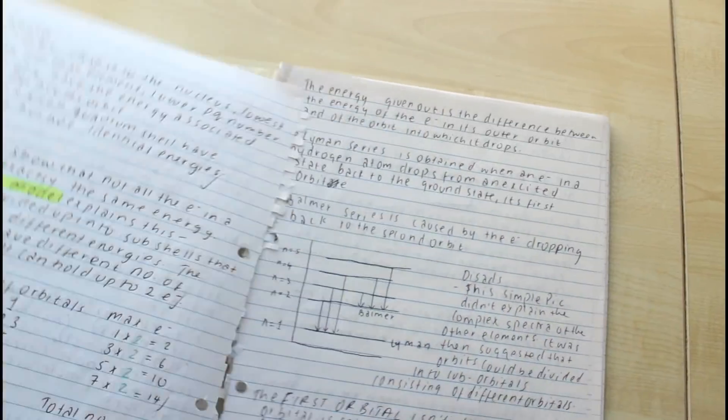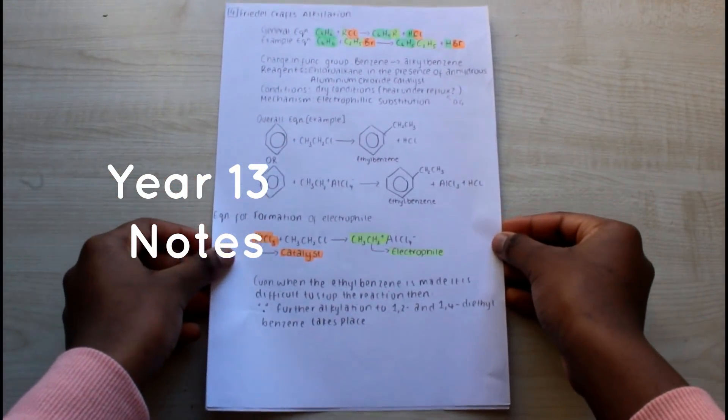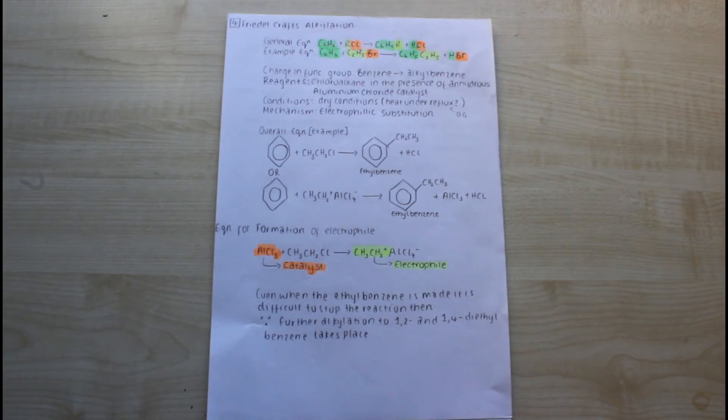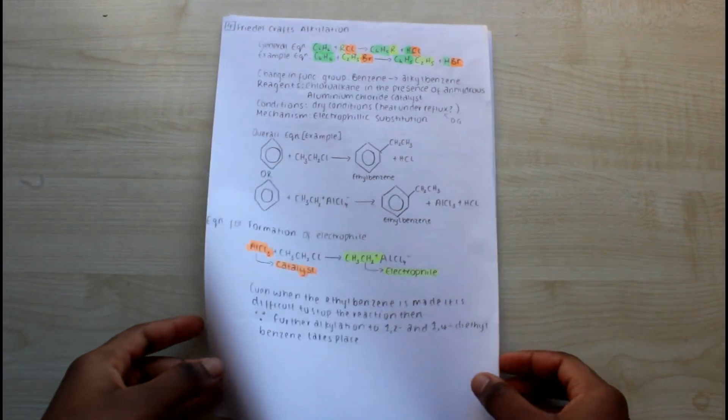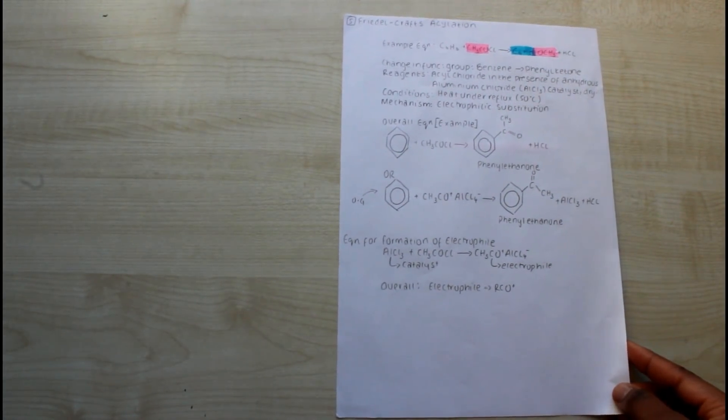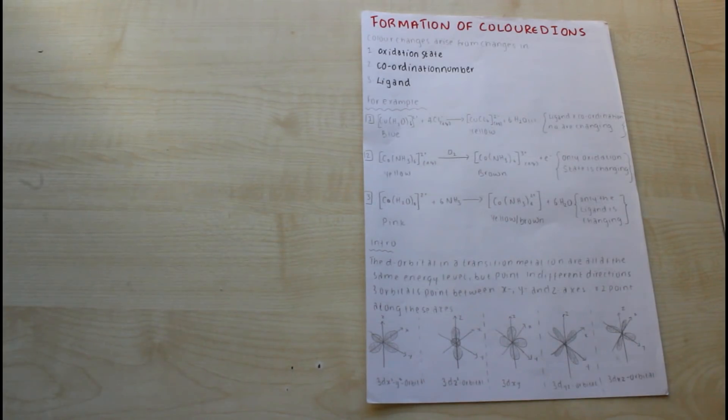So something had to change. Things started to click towards the end of year 12 and I found a note-taking method that works for me. I switched up my note-taking format and made it more engaging for myself. As you can see, these are way better than the previous ones. They're more vibrant, I leave space to explain the things that I don't understand to myself, and it's just very organized.